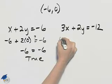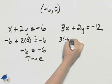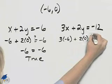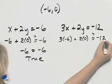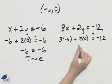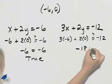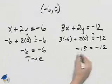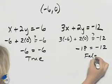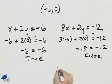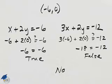In the second equation, I have three times negative six plus two times zero. We want to see if that equals negative twelve. Two times zero is zero, and three times negative six is negative eighteen. So I end up with negative eighteen equal to negative twelve, which is false. Because we don't obtain two true statements, this is not a solution to this system.